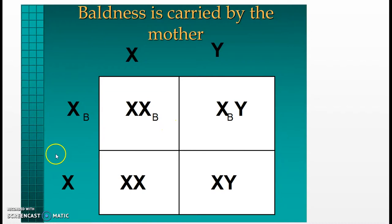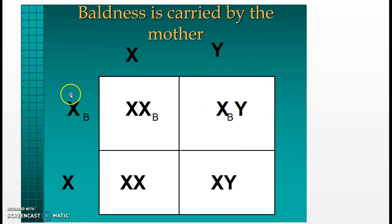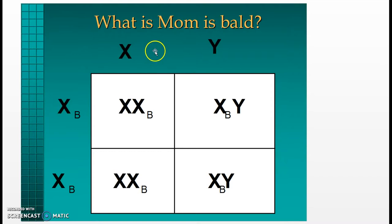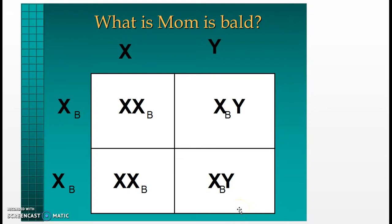If your mother is carrying the baldness trait, a female offspring carrying only one baldness trait will not be bald. A female offspring not carrying any baldness trait will also not be bald. A male offspring with no baldness trait will not be bald. However, 25% of all offspring and 50% of the male offspring will be bald when the mother carries the baldness gene. If mom is bald and the father does not carry the baldness gene, 50% of offspring will be female and none of the females will be bald, but 50% will be male and 100% of those males will be bald.